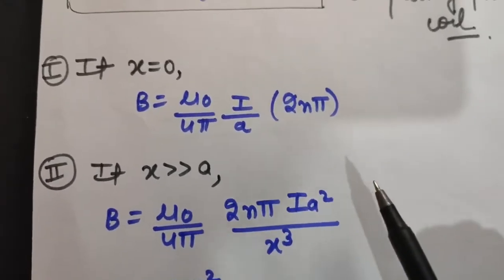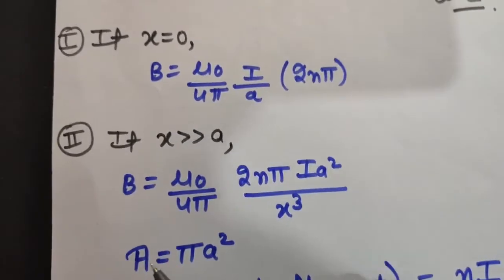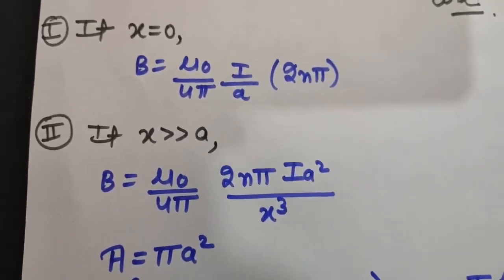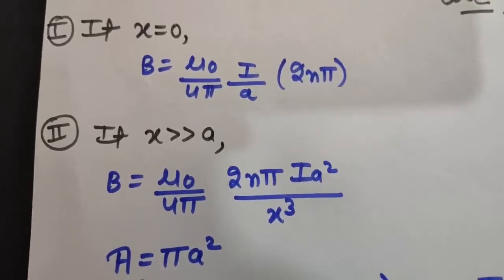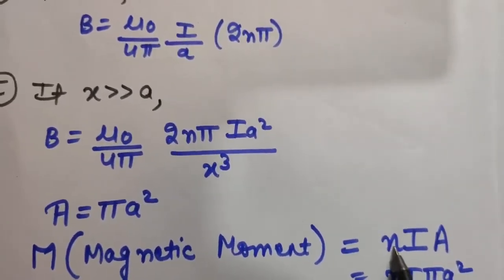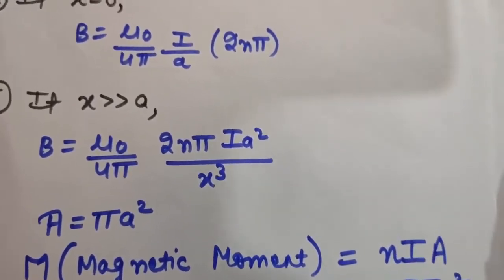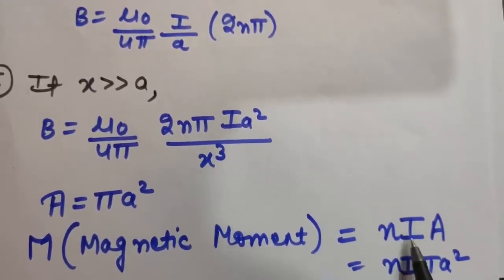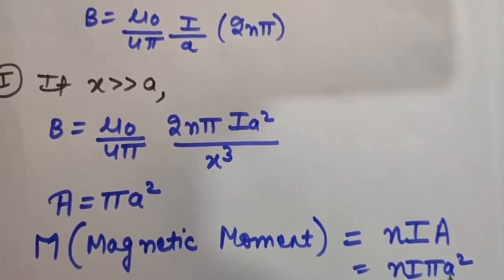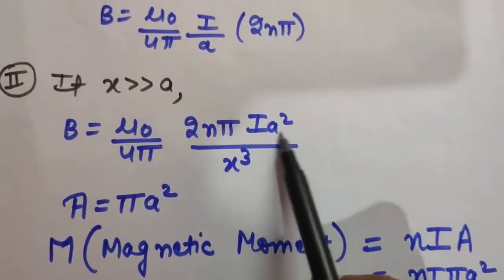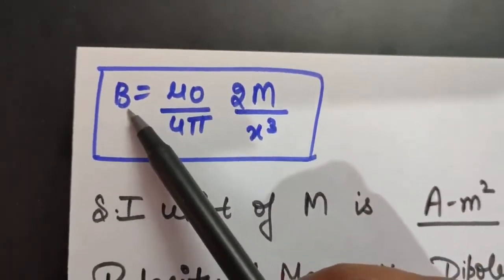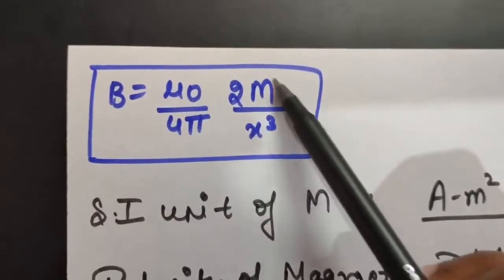Now, πA² is the area of the loop. Just as electric dipole moment was defined as charge times distance (Q × 2A), similarly we define magnetic moment as current times area. Magnetic dipole moment M = N × I × πA², where N is the number of turns. Putting this into the formula gives B = (μ₀/4π) × (2M / x³). This is the magnetic field on the axis of a coil in terms of magnetic moment. The SI unit of magnetic moment is ampere·meter².